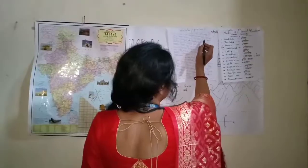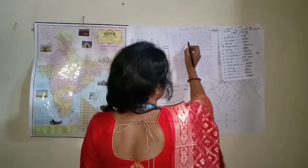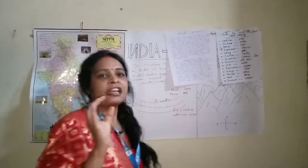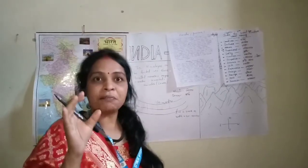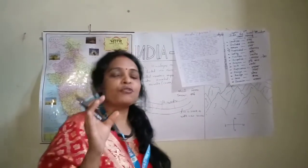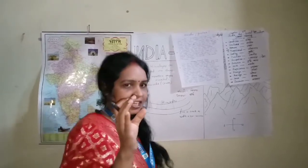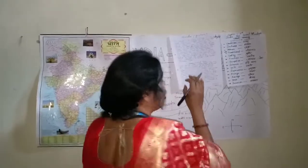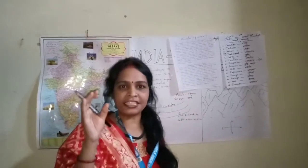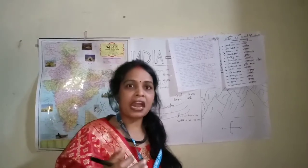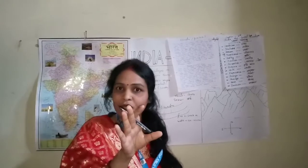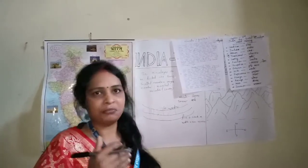In some places, huge masses of ice called glaciers are found. You will know that the glacier comes from the ground, and after melting, we are able to get water.